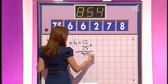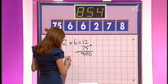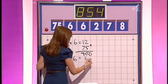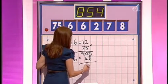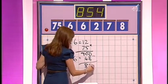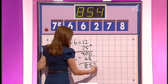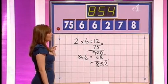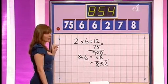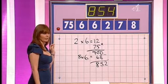8 times 6 is 48. 8 multiplied by the other 6 is 48. And take that away. And then you have 852, just 2 away. 7 points there, Carol — can you do that? No, I was 1 away, 1 above: 8, 5, 5.